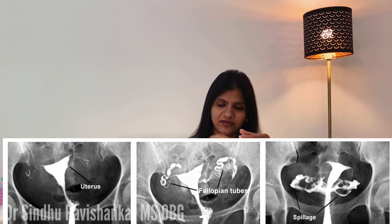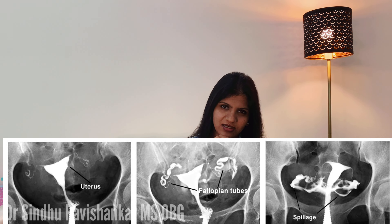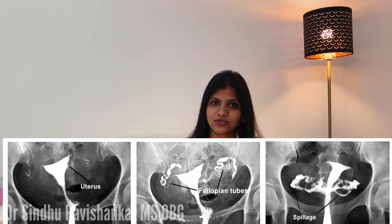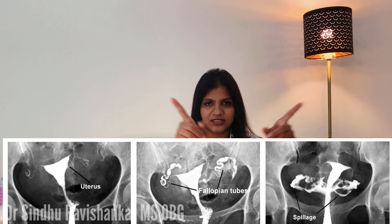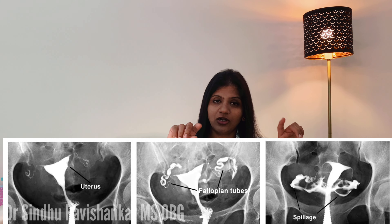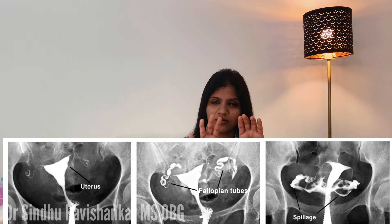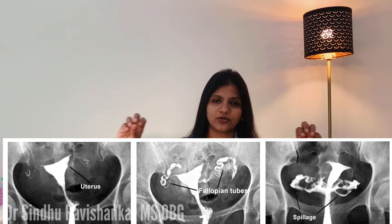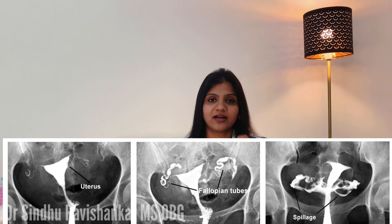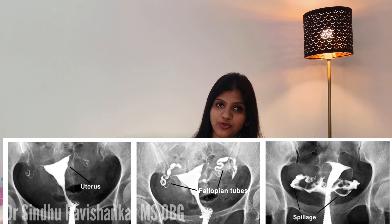To hold the cervix and visualize the tubal structure, we push iodine dye through the cervix into the uterus and tubes. We inject the iodine dye to outline the uterus and tubes. You can see the dye flowing through the tubes. If the dye flows freely and spills out, we call this bilateral tubal patency - meaning both tubes are open.